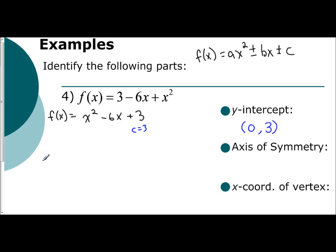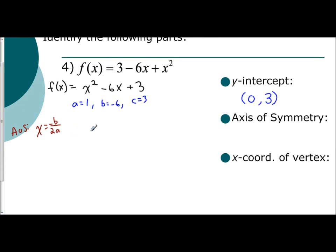For the axis of symmetry, we use the equation x = -b / 2a. From our function, a = 1 and b = -6. Plugging in: x = -(-6) / (2×1) = 6/2 = 3. So the equation for the axis of symmetry is x = 3. The x-coordinate of the vertex is the same value: 3.